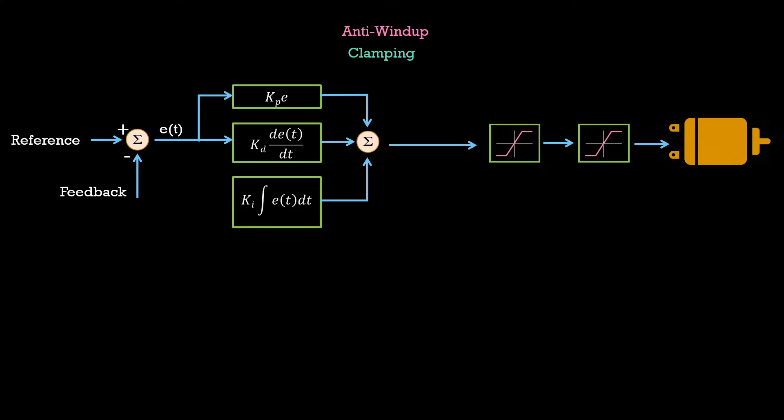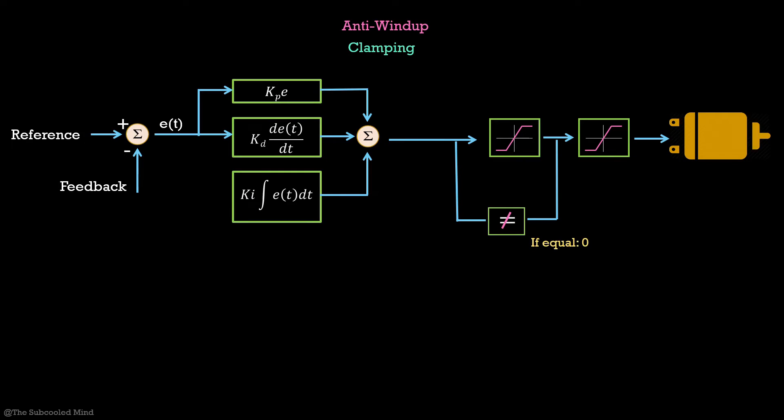Stop the integrator from integrating if the commanded input has already saturated. The way to do it is, we compare the difference between the commanded input and the output of the saturation block. If these values are the same, that means saturation has not occurred yet and you do not need to do anything. But if the commanded input becomes greater than the saturation block output, then you have to stop integrating.